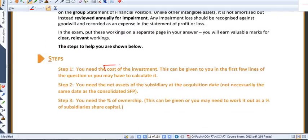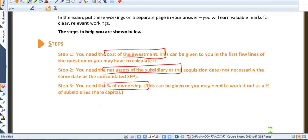To calculate goodwill, we need the cost of the investment, the net assets of the subsidiary, and how much of the subsidiary we own.